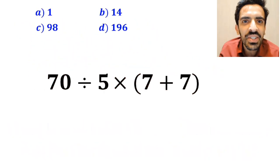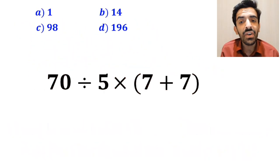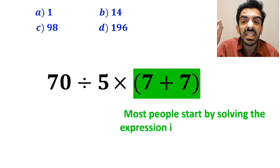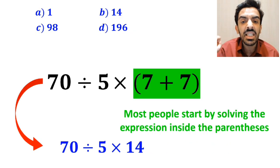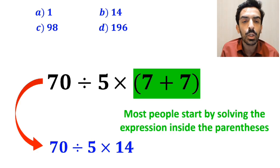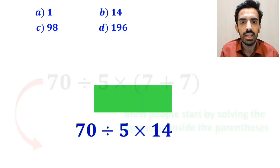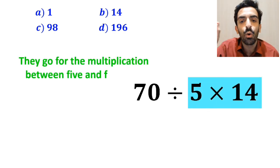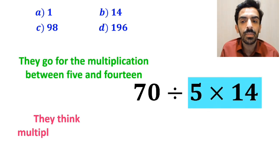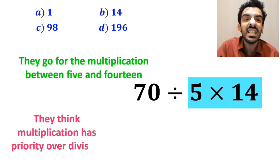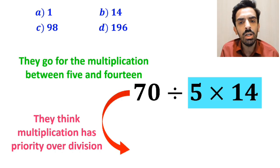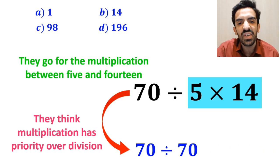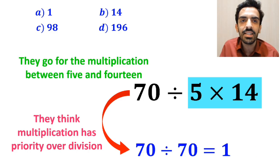Let's break it down and solve it together. In the first step, most people start by solving the expression in the set of parentheses, and replace it with 70 divided by 5 multiplied by 14. In the next step, they go for the multiplication between 5 and 14, because they think multiplication has priority over division. So this expression simplifies to 70 divided by 70, which finally gives them the answer 1.